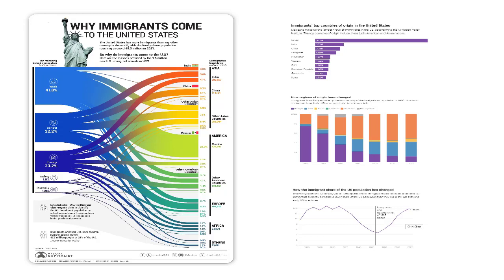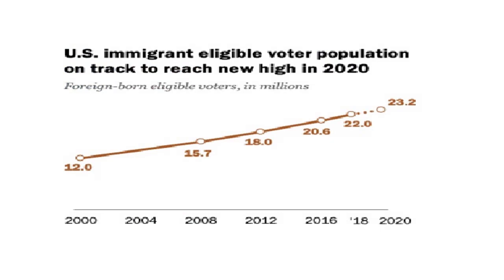What's interesting is that the African component has also been growing. One of the things about Africa, believe it or not, is that a lot of those immigrants are Islamic, which is always a concern given the geopolitics of today. You can see on the bottom right-hand chart that the foreign-born population has changed dramatically since the immigration laws back in 1963. The U.S. immigration-eligible voter population has been tracking steadily higher — it was 12% in 2000, and now it's almost doubled.